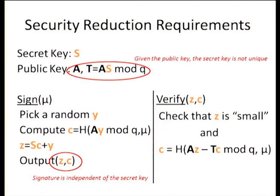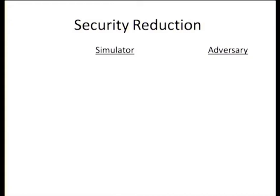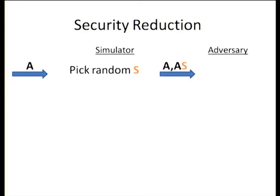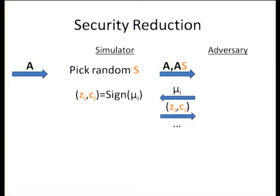Verification uses the homomorphic properties of the vector multiplication. It checks that H of AZ minus TC mod Q equals C. Note that AZ minus TC is really AY. You also have to check that Z is small — this doesn't happen in number-theoretic constructions where you don't care about the size of the discrete log, but here you really do care.